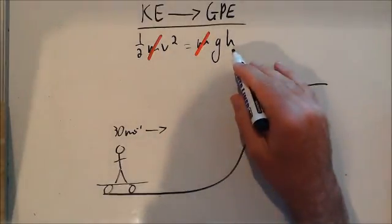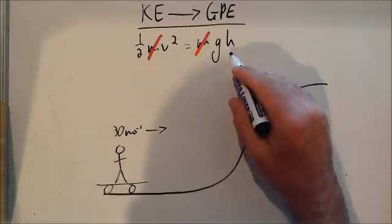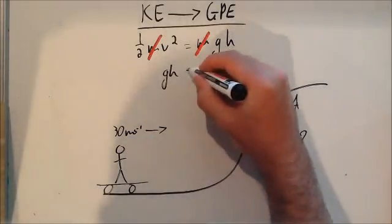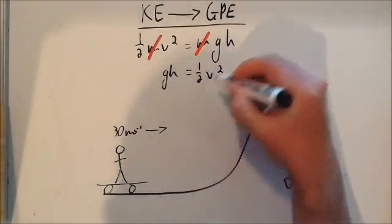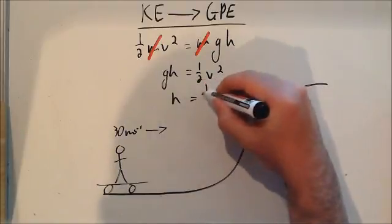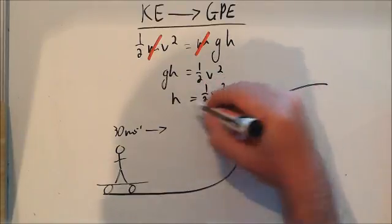With a bit of rearranging, we can figure out, make h the subject. So gh equals half v squared, h will equal half v squared divided by g.